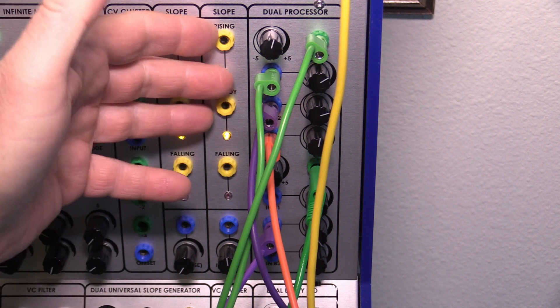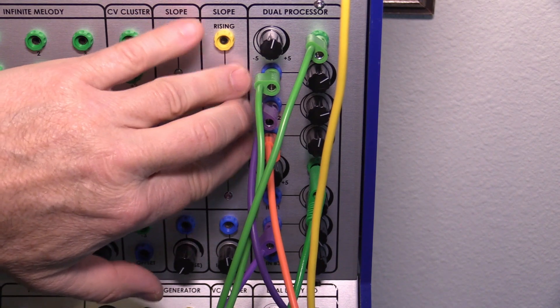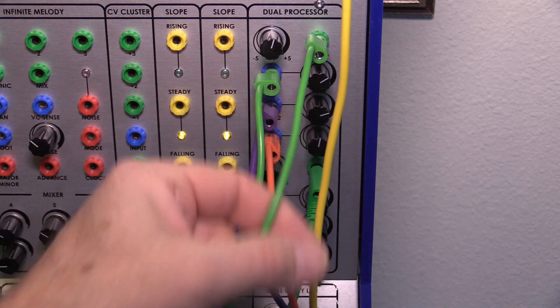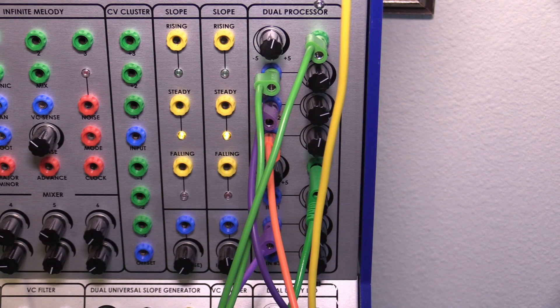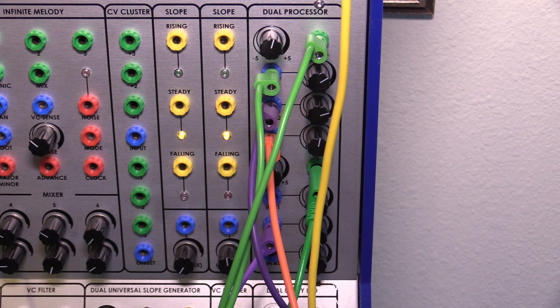So the dual processor, as you can see, is a very simple device that allows you to be able to add or subtract control voltages from each other and use them to be able to modulate any parameter on the modular that you can think of. So that's it for this module. I hope you enjoyed it, and thanks for listening.